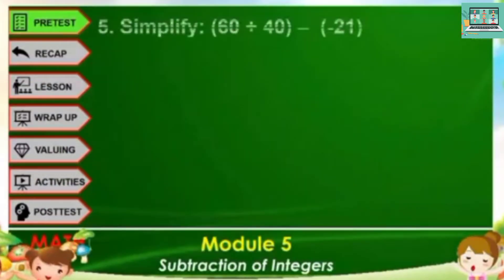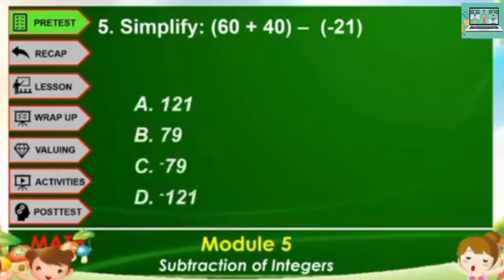Number 5. Simplify 60 plus 40 minus negative 21. A, 121. B, 79. C, negative 79. D, negative 121.